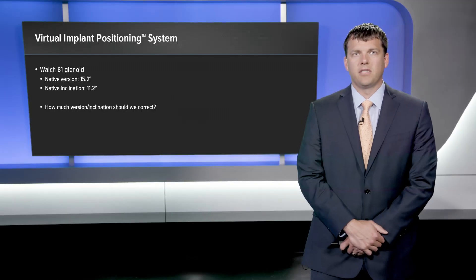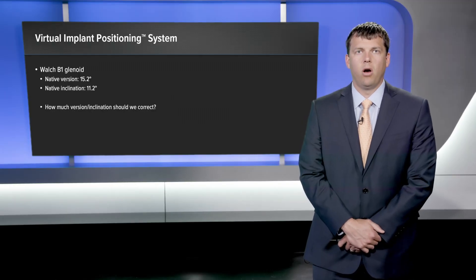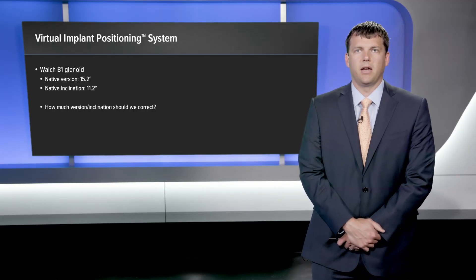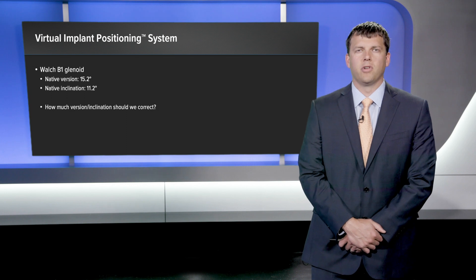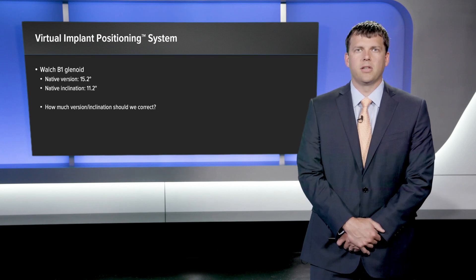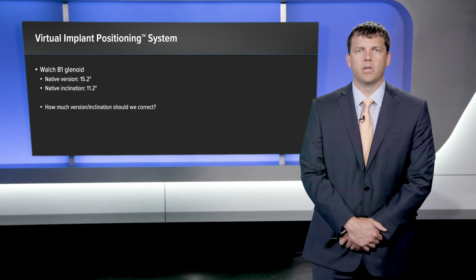The patient is classified as having a Walch B1 glenoid based on his retroversion. His native retroversion was 15.2 degrees and his native inclination was 11.2 degrees, which is a positive or superior inclination. The question becomes how much version and how much inclination should we correct?